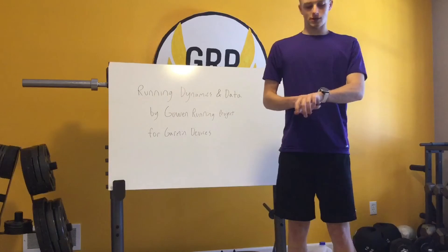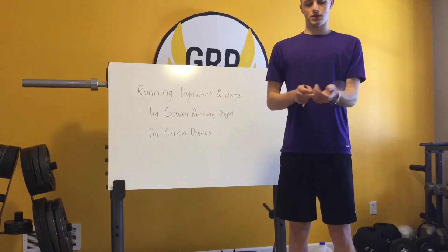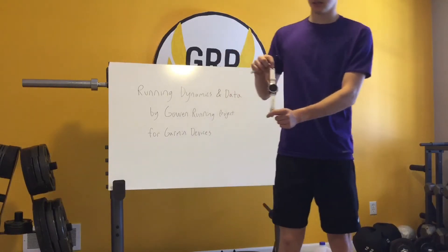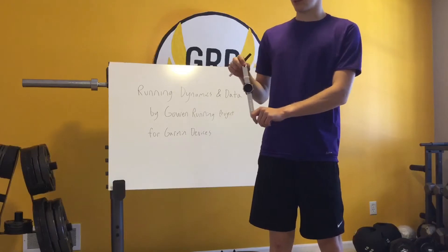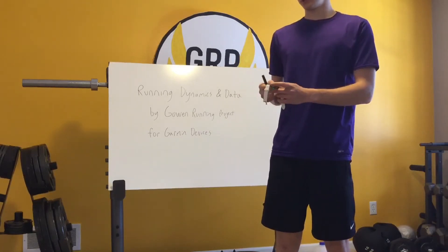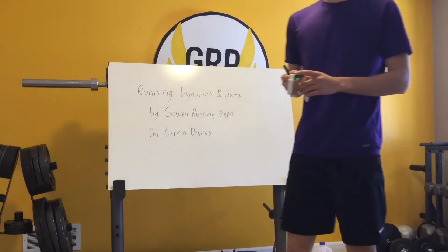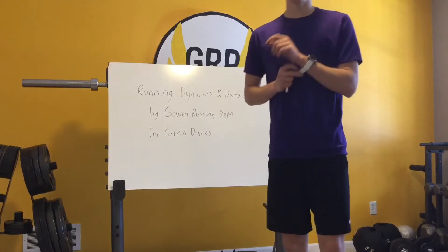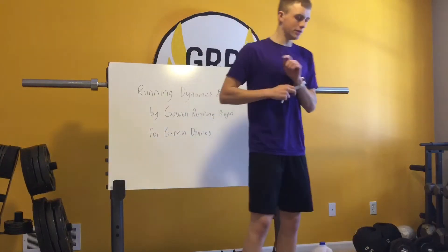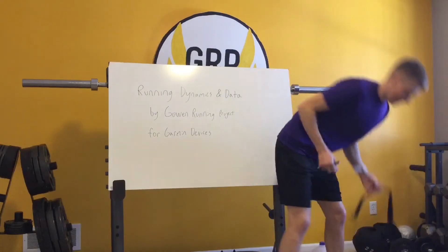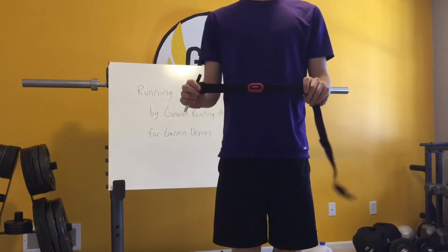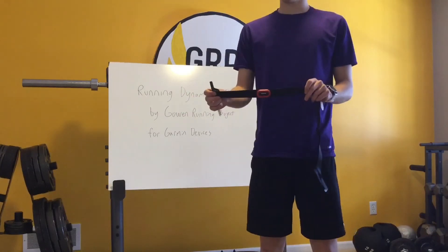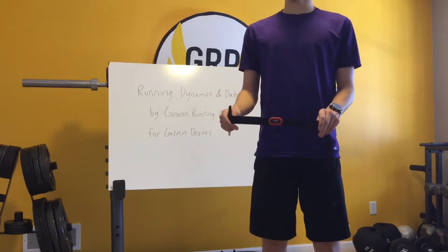I'm going to show you what you need in order to get this kind of data for your run. This is my watch — it's the Garmin Fenix 5S. It's one of the best watches you can get, and pretty much all Garmin devices are capable of tracking your dynamics. Now, not only do you need a watch, but if you want accurate data you're going to need a chest strap heart rate monitor, which is going to measure your heart rate and give you a lot of other statistics.